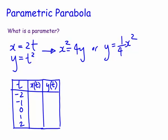The x value is 2 times t, so for t equals minus 2 we get x equals minus 4; for minus 1 we get minus 2; for 0 we get 0; for 1 we get 2; and for 2 we get 4. That's just putting the t values into x equals 2t. For y we square the parameter: y values are 4, 1, 0, 1, and 4.